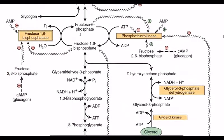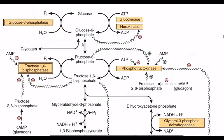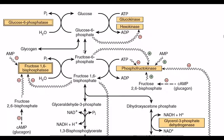Fructose 1,6-bisphosphate to fructose 6-phosphate is an irreversible step in glycolysis, so we need special enzymes to reverse it in gluconeogenesis. Fructose 6-phosphate is then converted to glucose 6-phosphate via an isomerase reaction.